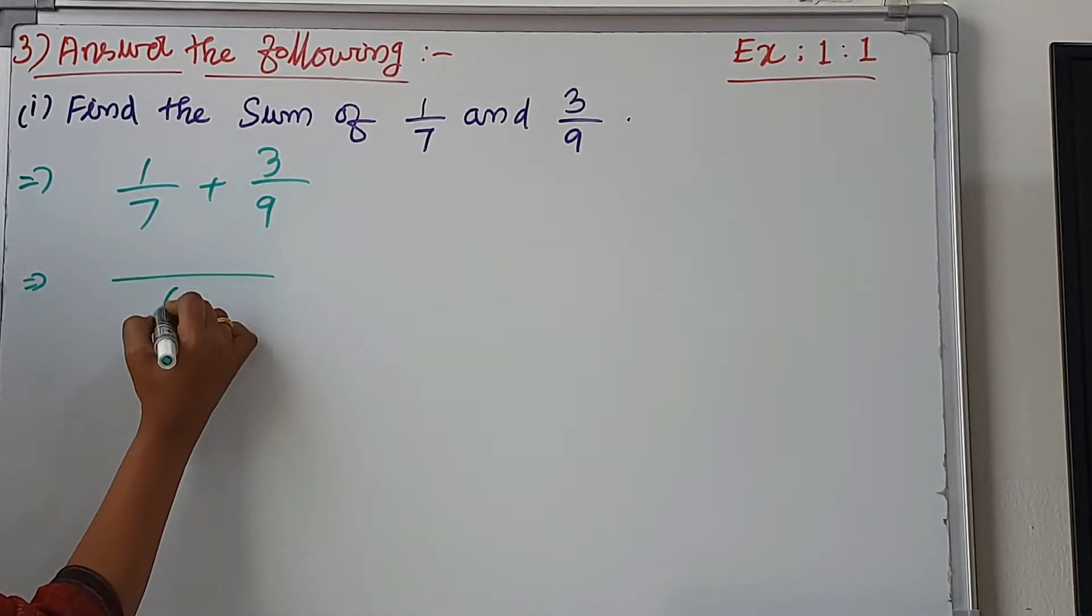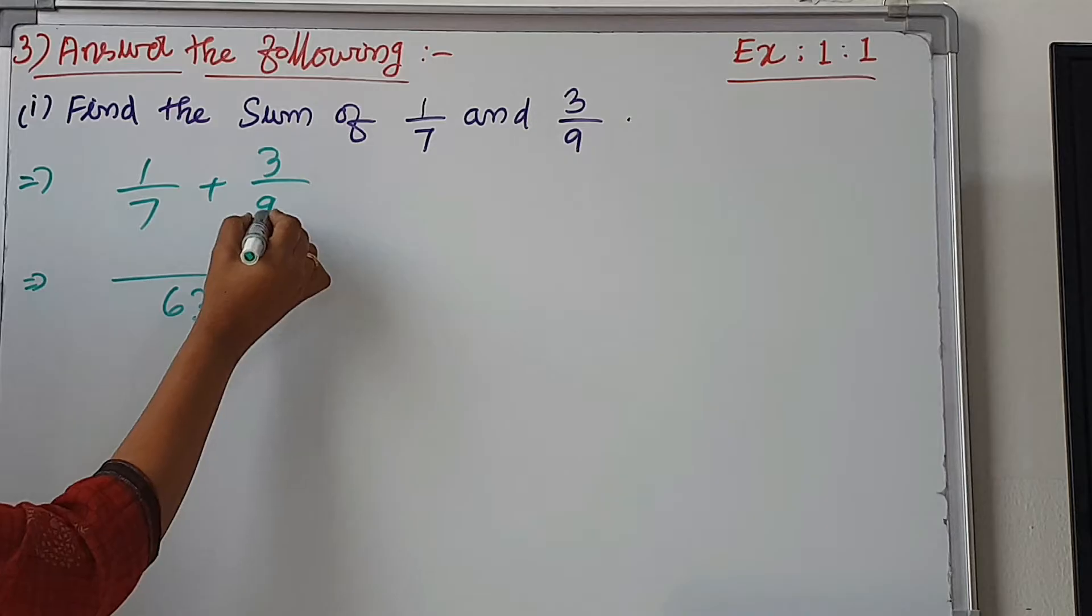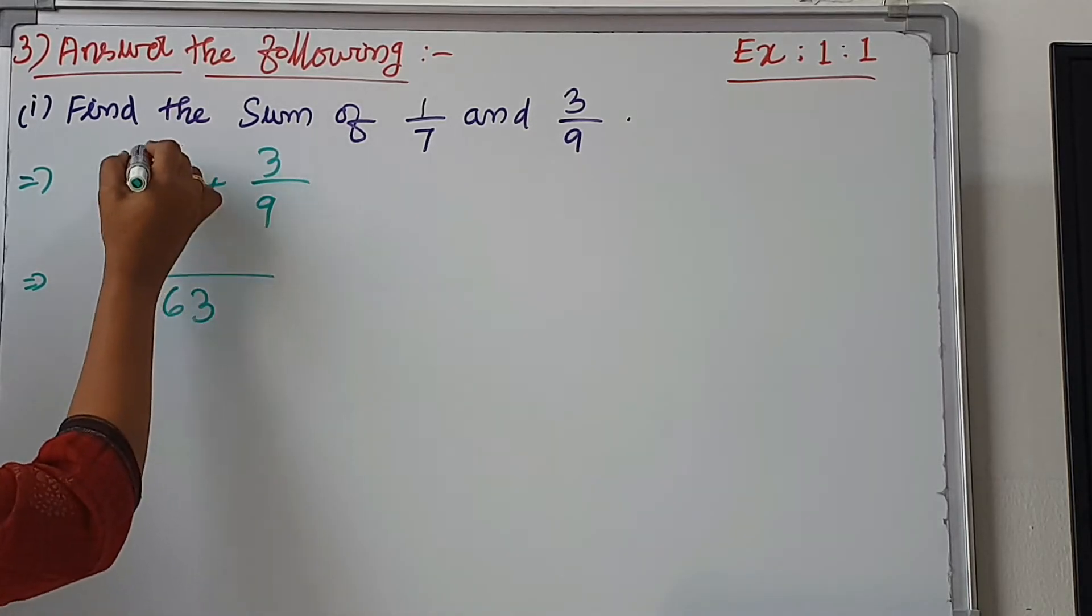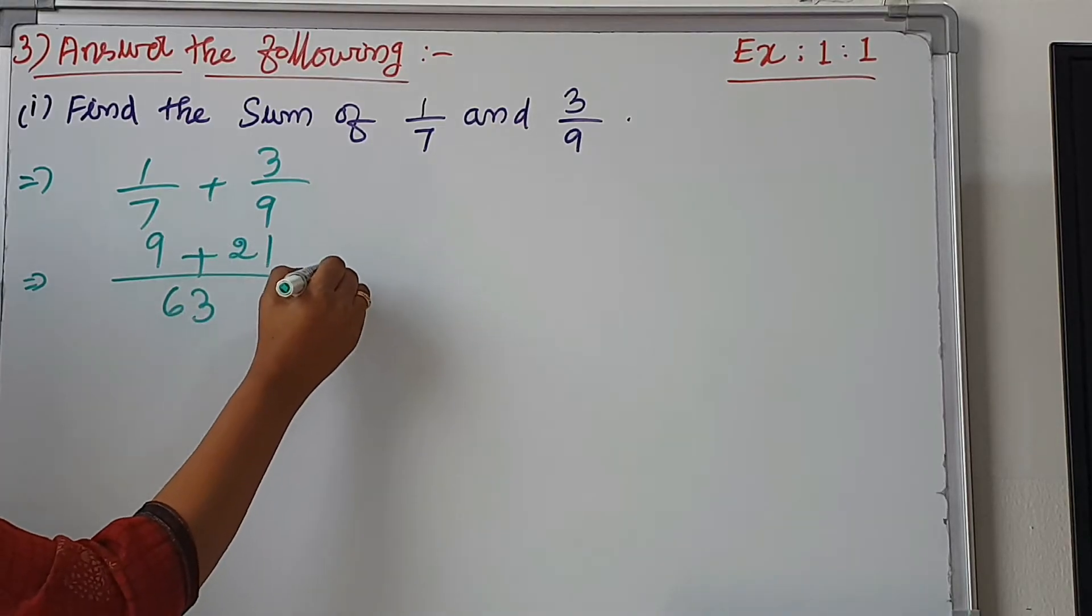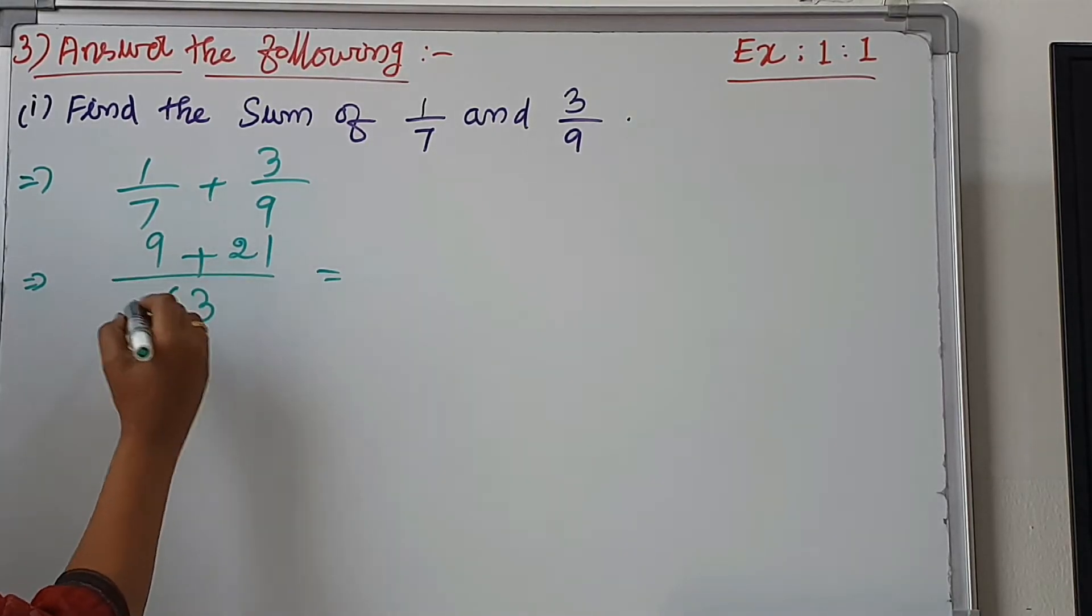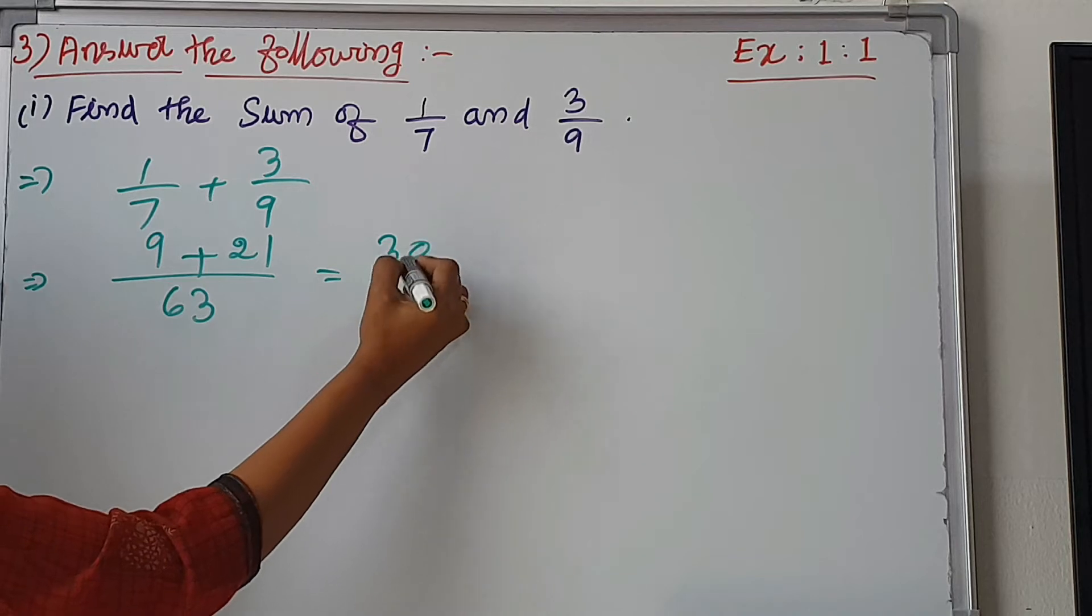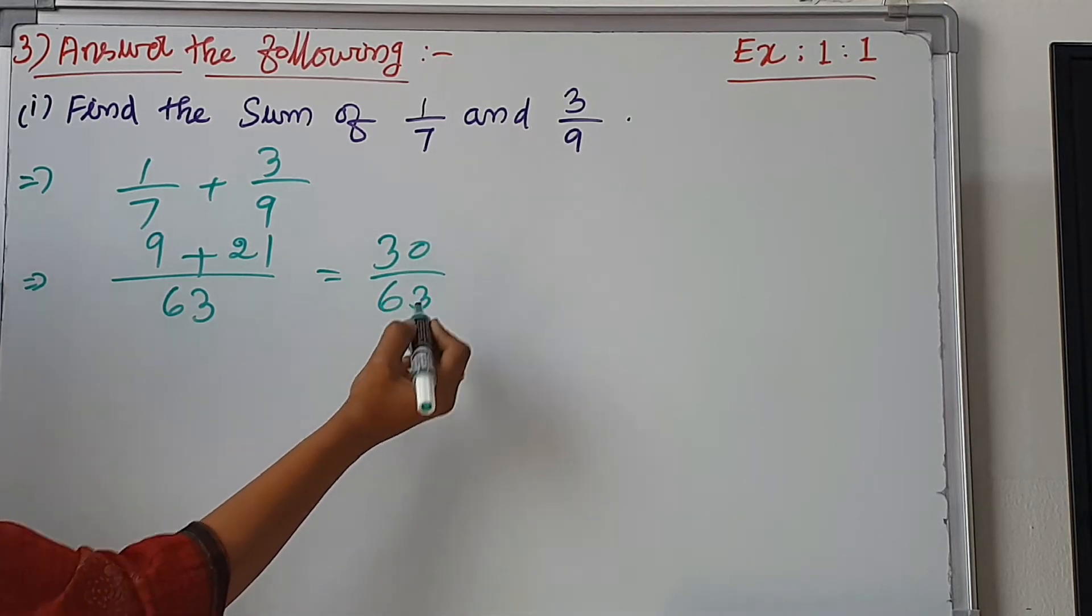Multiply: 9 times 7 is 63. Cross multiplication: 9 times 1 is 9, plus 7 times 3 is 21. 21 plus 9 is 30. 30 divided by 63.